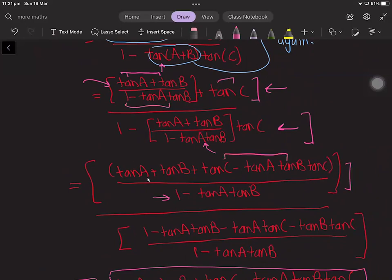And over here, we can also bring this one under the common denominator of 1 - tan(A)tan(B), so this is why we have 1 - tan(A)tan(B) here, and we're also expanding the tan(A) times tan(C) and tan(B) times tan(C) over here.